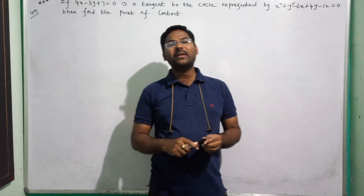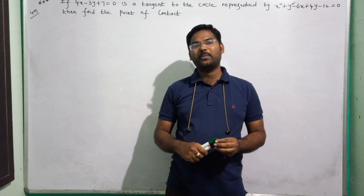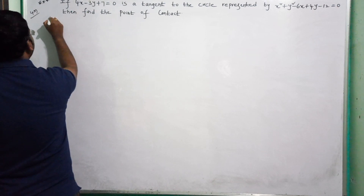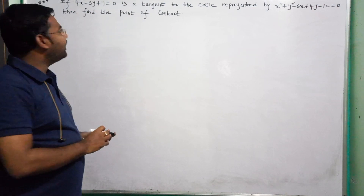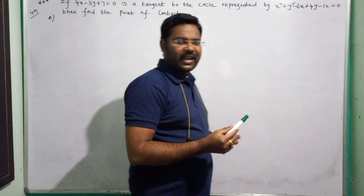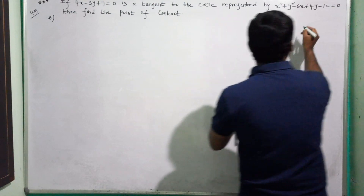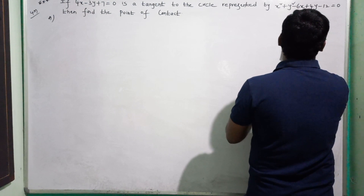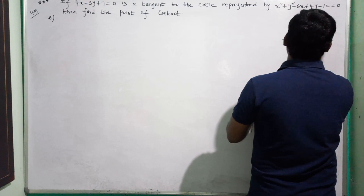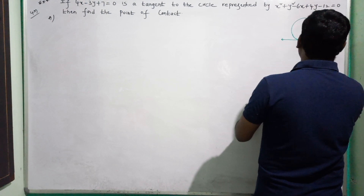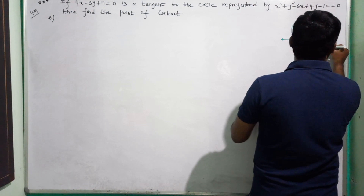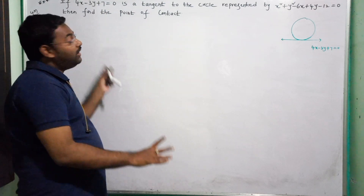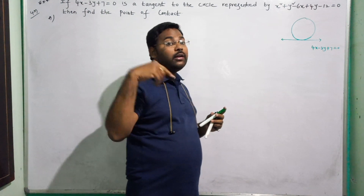You can share the video with friends. We have discussed the problem: if the line 4x - 3y + 7 = 0 is a tangent to the circle, then find the point of contact. Our target is to find the point of contact.